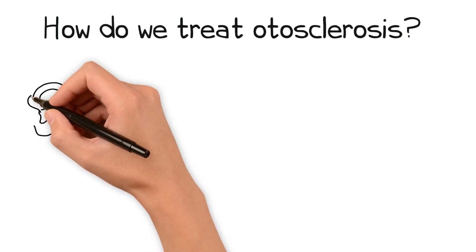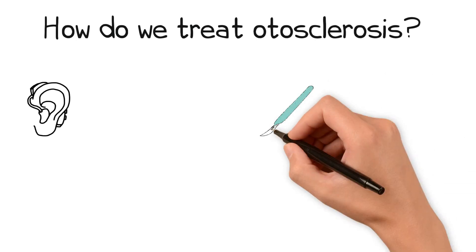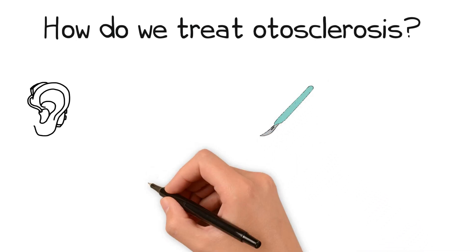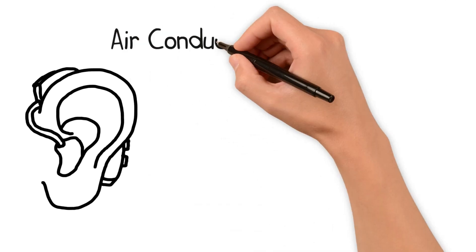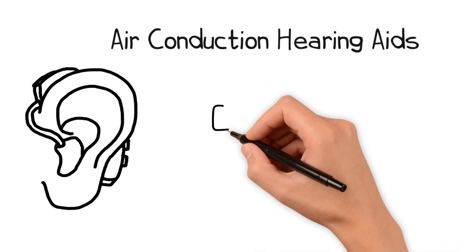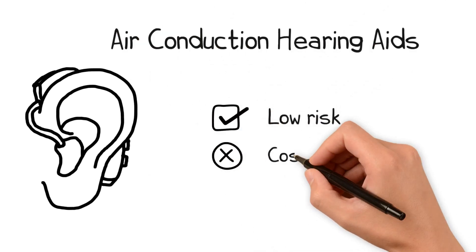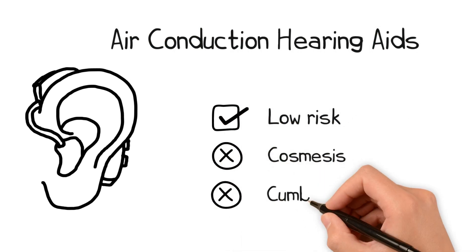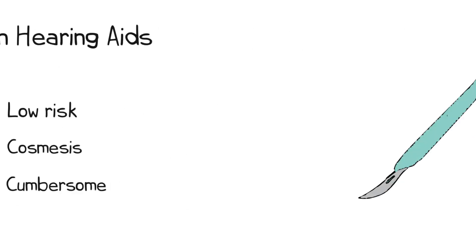Treatment of otosclerosis includes air conduction hearing aids, stapes surgery, or in far advanced cases, potentially cochlear implantation. Hearing aids offer a low-risk solution to hearing loss; however, patients may not appreciate the cosmesis of wearing them, or may find looking after them to be cumbersome.